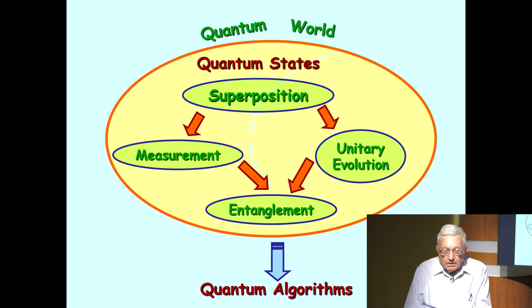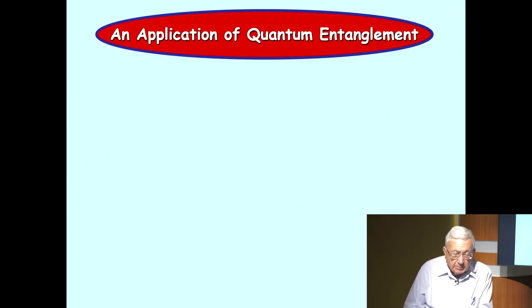Before I do that, what I'd like to do is to show you an application of quantum, how quantum entanglement can be used. So here is an application. Initially Einstein, Podolsky, and Rosen tried to get rid of the concept of entanglement. And we now realize that we can't get rid of it. It's actually an essential part of quantum mechanics.